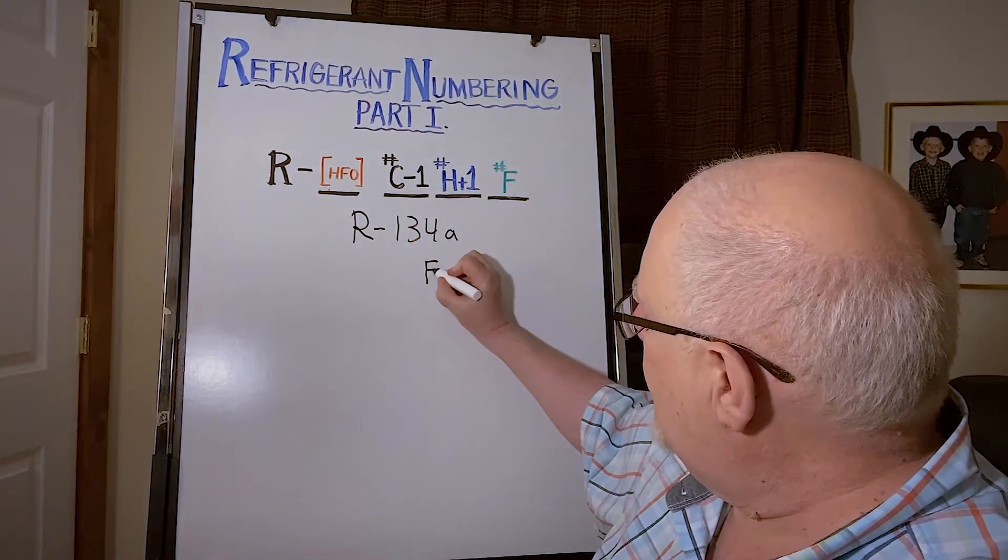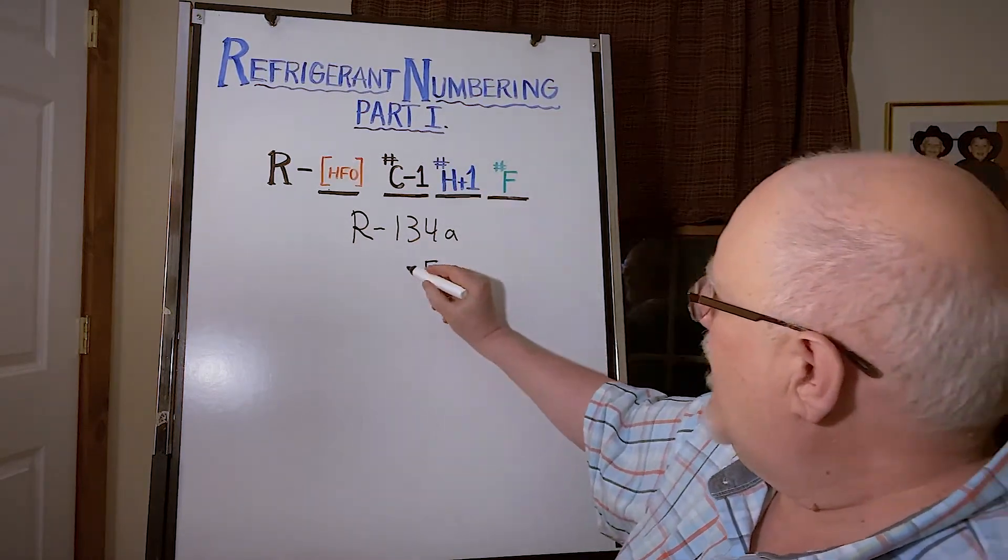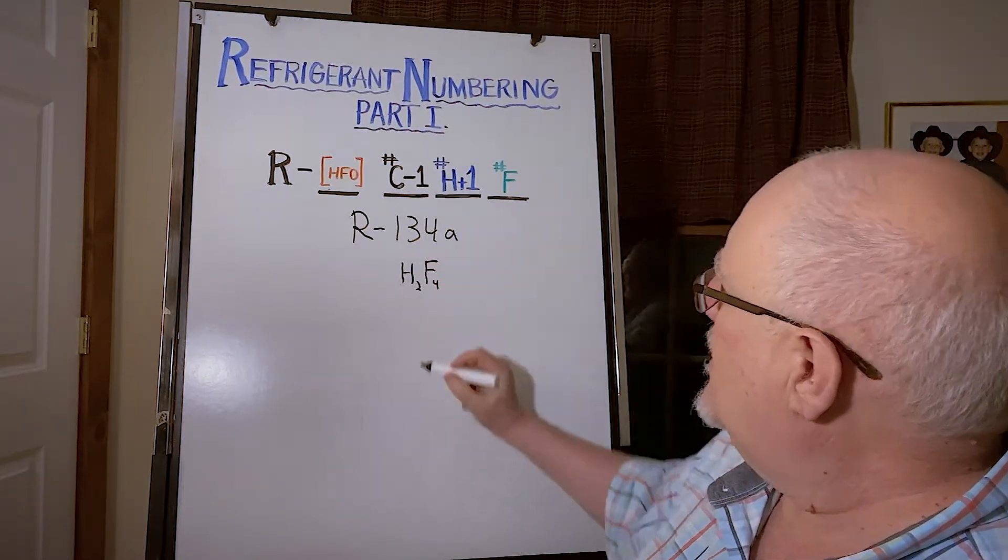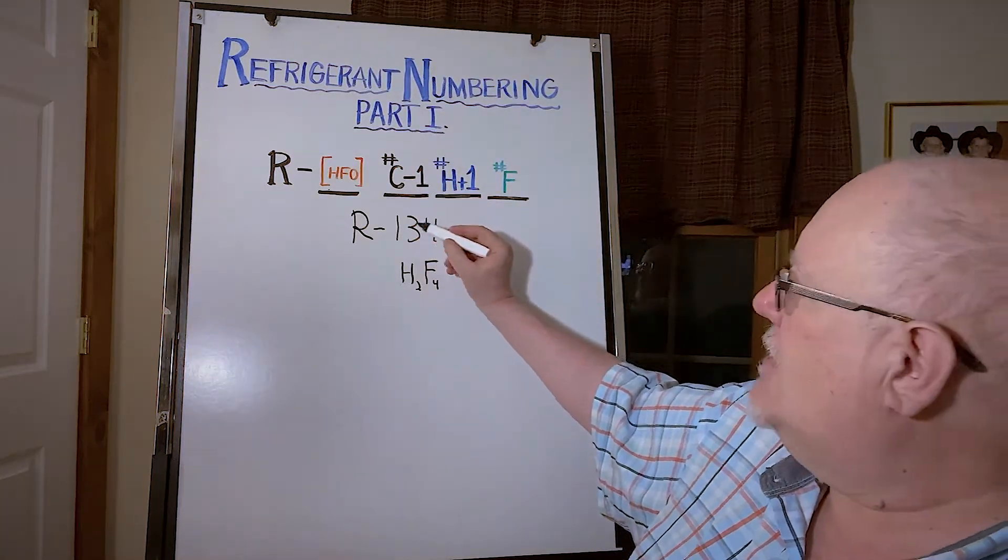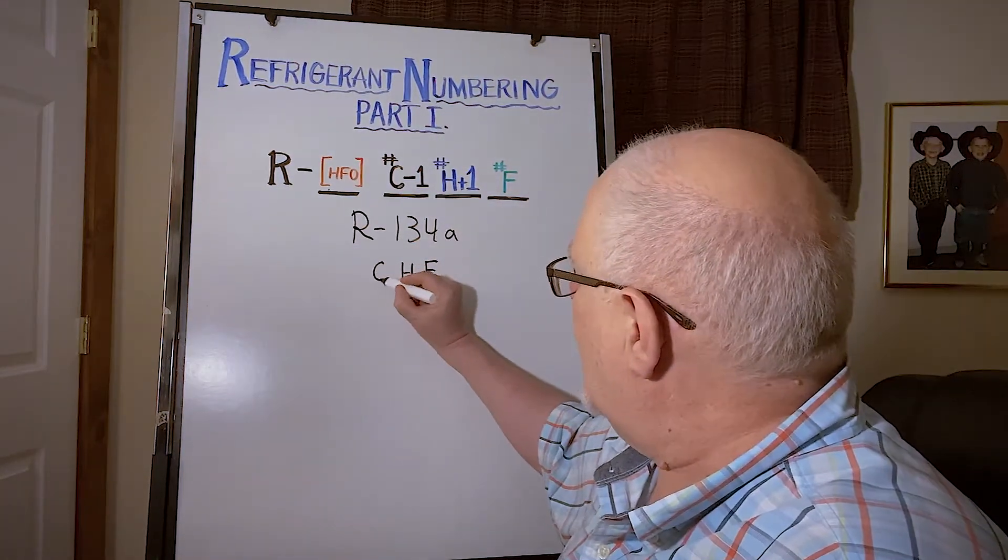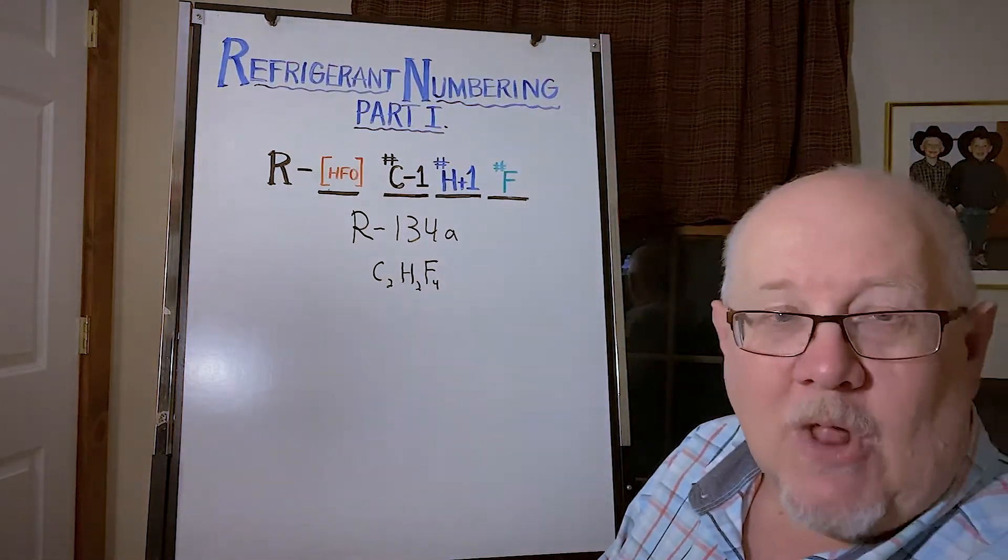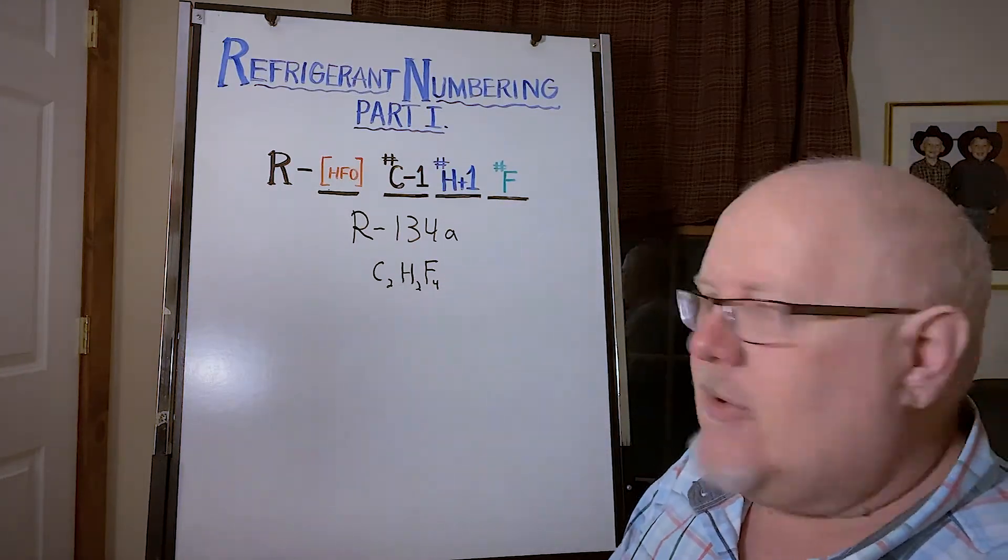If we go up to our formula, we see 4 is the number of fluorines in 134a, so we have four of those. 3 is one more than the number of hydrogens, so this molecule is going to have two hydrogens. Likewise, we have a 1 which is one less than the number of carbons, so the carbons therefore is two. So C2H2F4 is the molecular formula: tetrafluoroethane will be the chemical name.